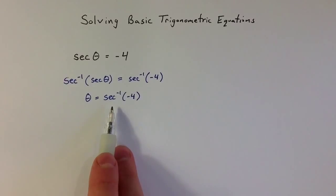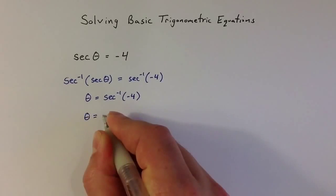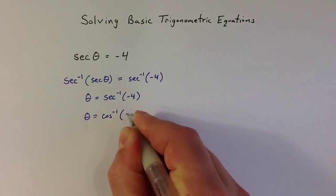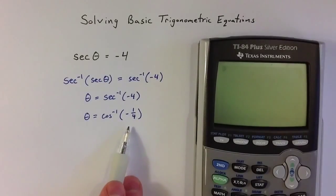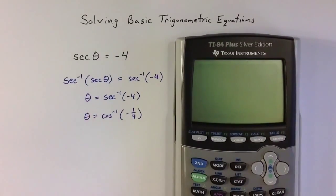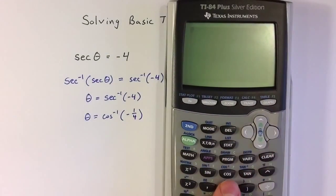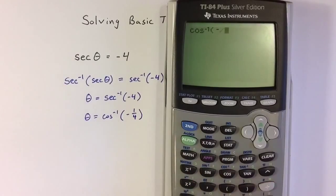Now secant is related to cosine. Secant is the reciprocal of cosine, and so the angle theta that we're looking for is equal to inverse cosine of the reciprocal ratio of negative 1 fourth, because it's the ratios that belong inside the inverse function. Negative 1 fourth is not a ratio related to a nice point on the unit circle, but because I've translated it into a function I have on my calculator, inverse cosine, I can use second inverse cosine of negative 1 divided by 4 to find an angle measure.